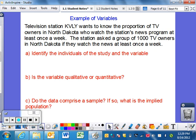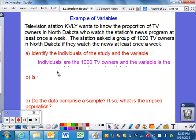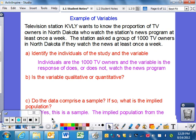Here's an example. Television station KVLY wants to know the proportion of TV owners in North Dakota who watch the station's news program at least once a week. The station asked a group of 1000 TV owners in North Dakota. The individuals of the study are the 1000 TV owners they're asking. The variable is the response of does or does not watch the news program.